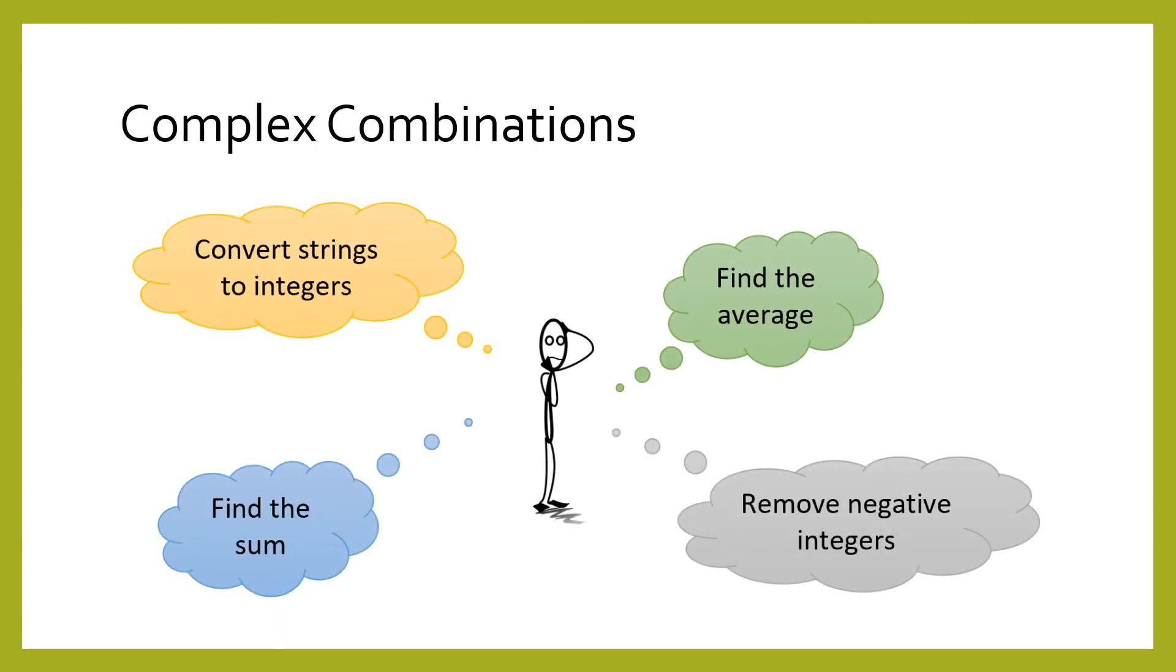Let's say that we wanted to add up all the negative numbers in a list. You could write a for loop that combines the filter pattern and the count pattern. You might even succeed. But what if you also needed to convert all the elements from strings to integers first? What if you needed to also find the average? Suddenly, combining all those patterns becomes difficult.